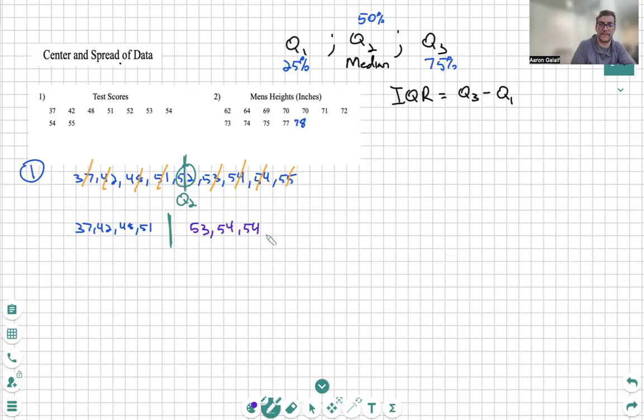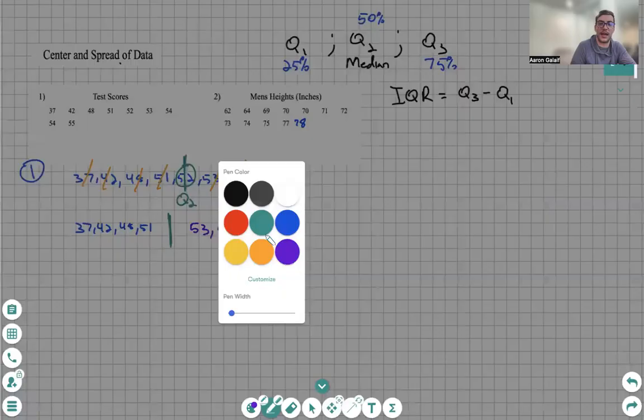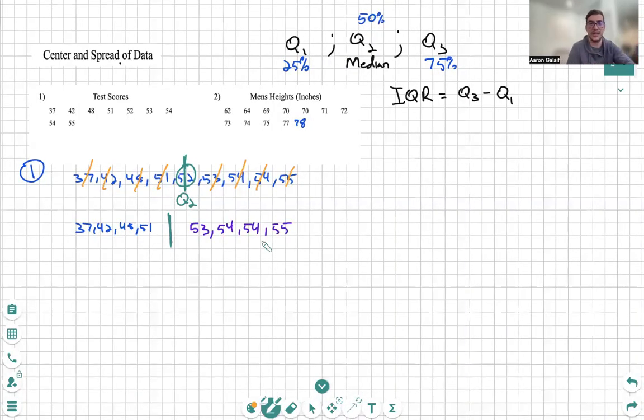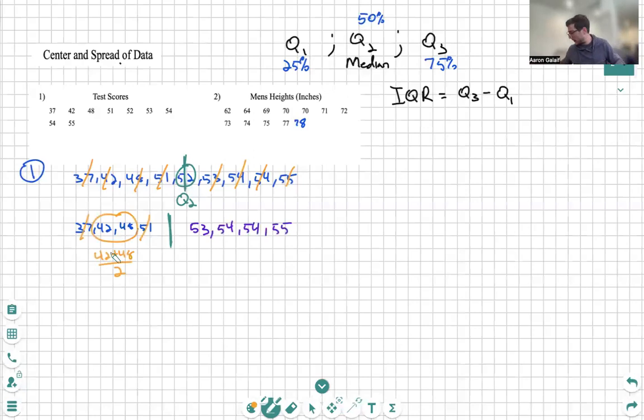Let's find the medians of both of those sections. So the median of the left - we cancel, cancel. We see there are two numbers here. When there are two we add them and divide it by two. We have 42 plus 48 divided by 2 equals 45. So we see our Q1 is equal to 45.